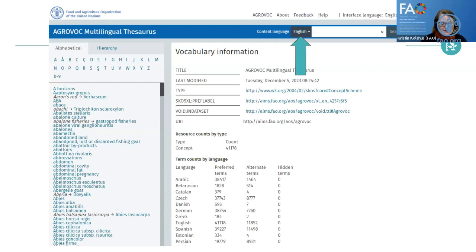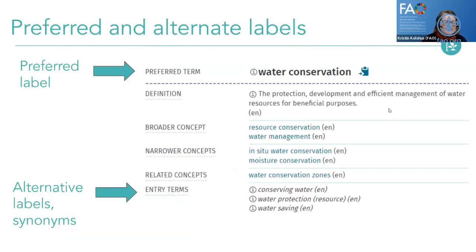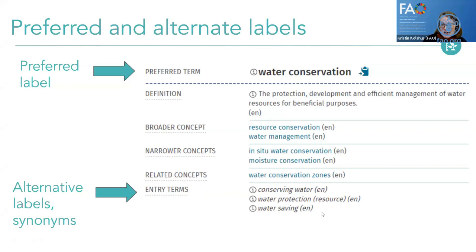An important thing to know is that when you're looking in AgriVoc, a concept could have a preferred label or alternate labels. For example, the topic of water conservation has 'water conservation' as the preferred label in English. But there are also entry terms — alternative labels or synonyms — such as 'conserving water,' 'water protection as a resource,' or 'water saving.' All are synonyms for water conservation, so searching for 'conserving water' will find 'water conservation.'